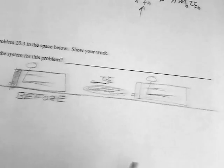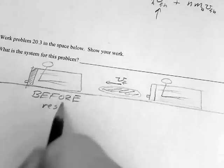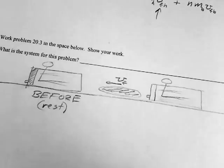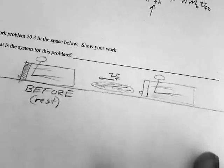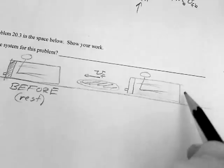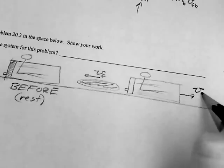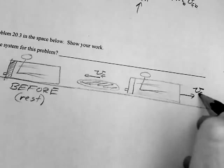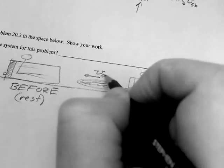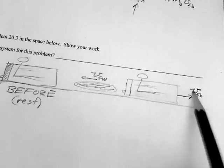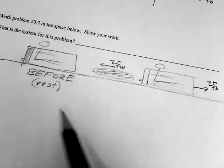And then afterwards, the water is shot out the back of this with some velocity, and that results in the velocity of the ice boat. So I'm going to put v sub b on that: v sub final water, v sub final boat.